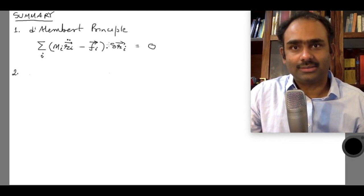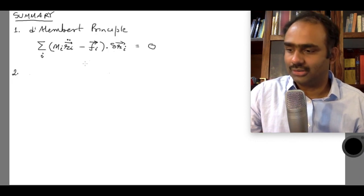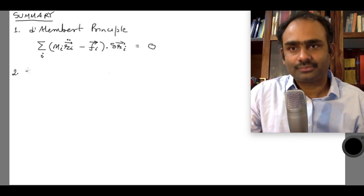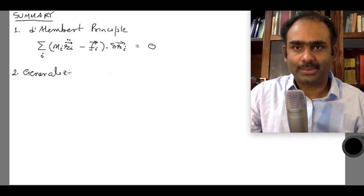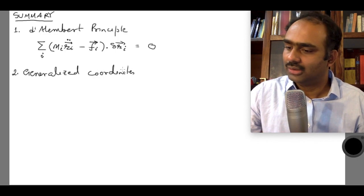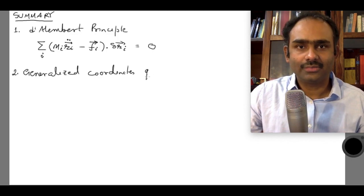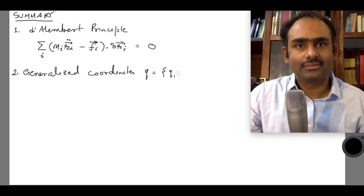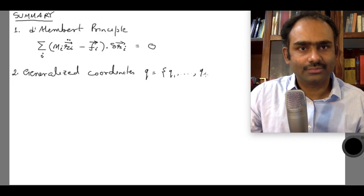So I could equate the coefficient of dq_alpha to zero. I introduced generalized coordinates — the set q_1 through q_{3n-k}.